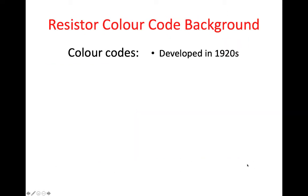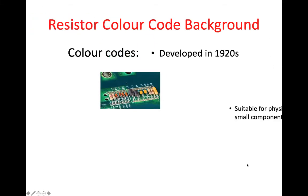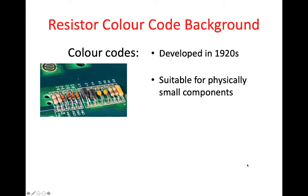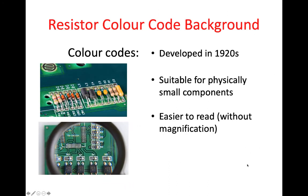Colour codes — a bit about their background. They were developed in the 1920s and they are suitable for physically small components, as can be seen in this diagram here. They're easy to read, so you don't need magnification to read them, which on some resistors where you actually have a value written on it, they can be quite small and you might need a magnifying glass to be able to see them.